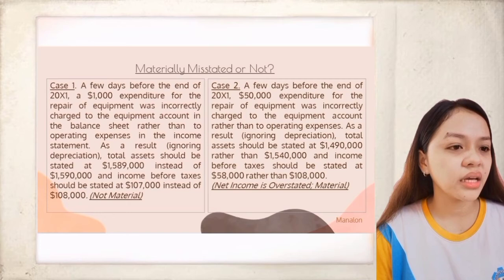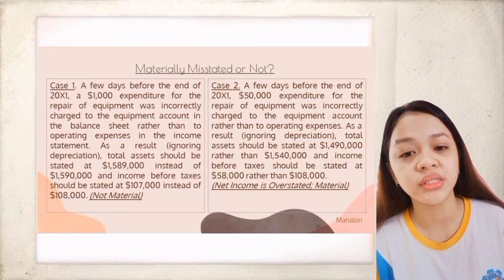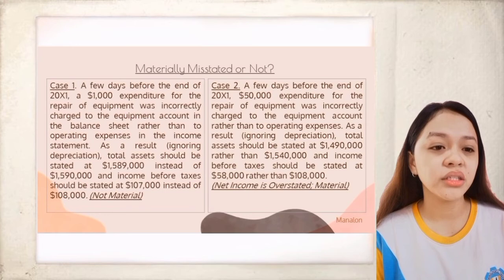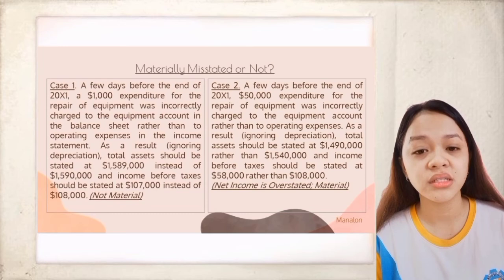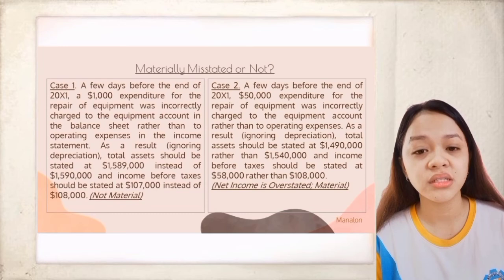In Case 1, the financial statement misstatement is not material since the $1,000 difference is not large enough to influence the decision-making of users. However, in Case 2, the net income is overstated by $50,000, making it a material misstatement since that amount is large enough to influence users' decisions.